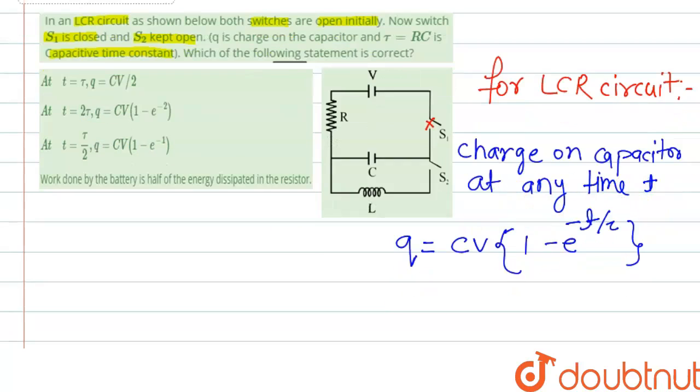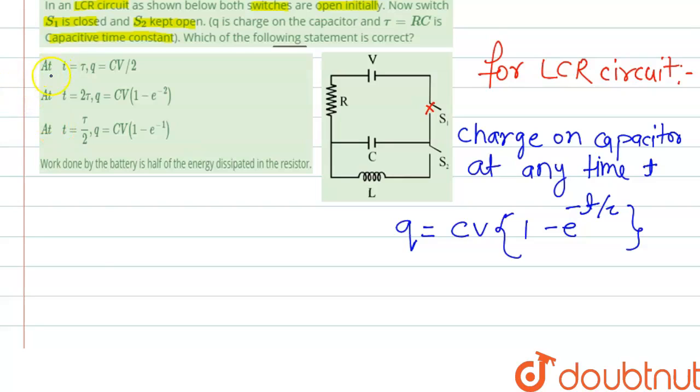So if we check for the first option where T is tau, if we substitute T equal to tau